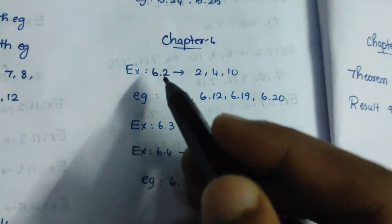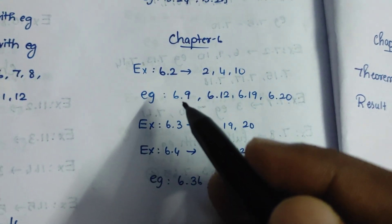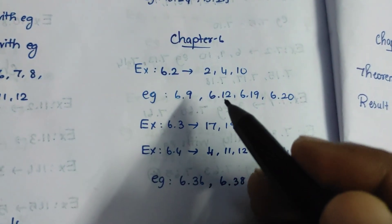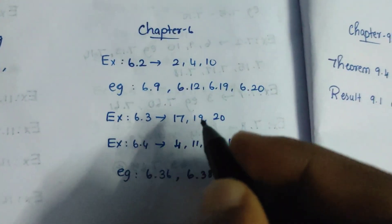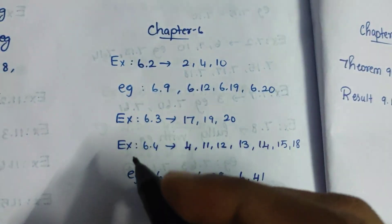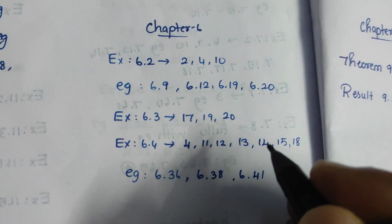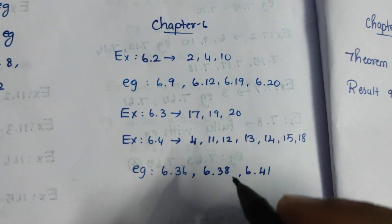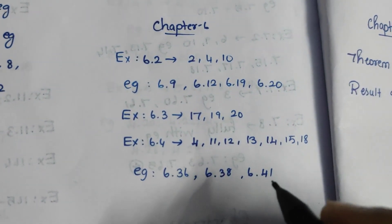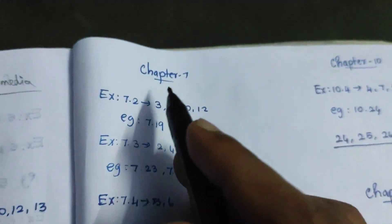Exercise 6.2: 2, 4, 10. Example 6.9, 12, 19, 20. Exercise 6.3: 17, 19, 20. Exercise 6.4: 4, 11, 12, 13, 14, 15, 18. Exercise 6.36, 6.38, 6.41. You will see it in the sixth chapter.